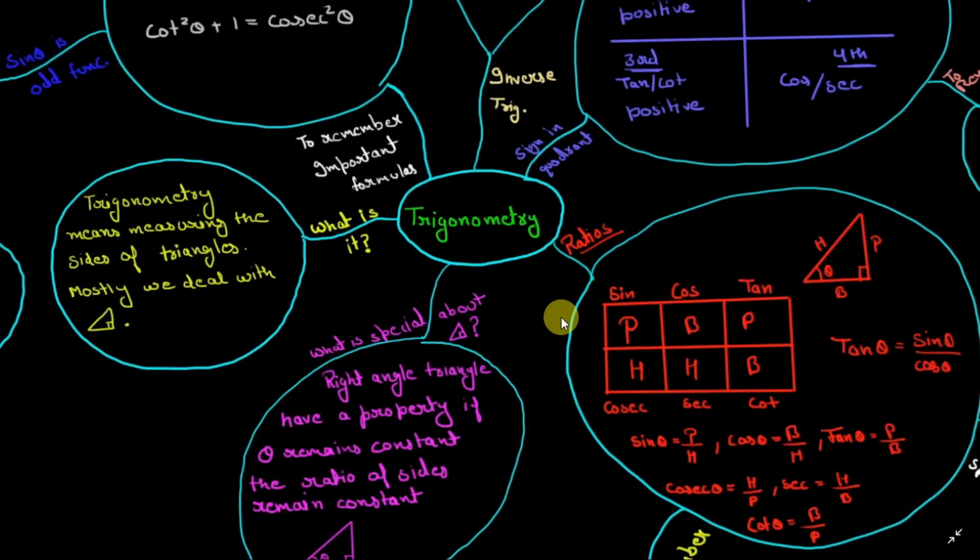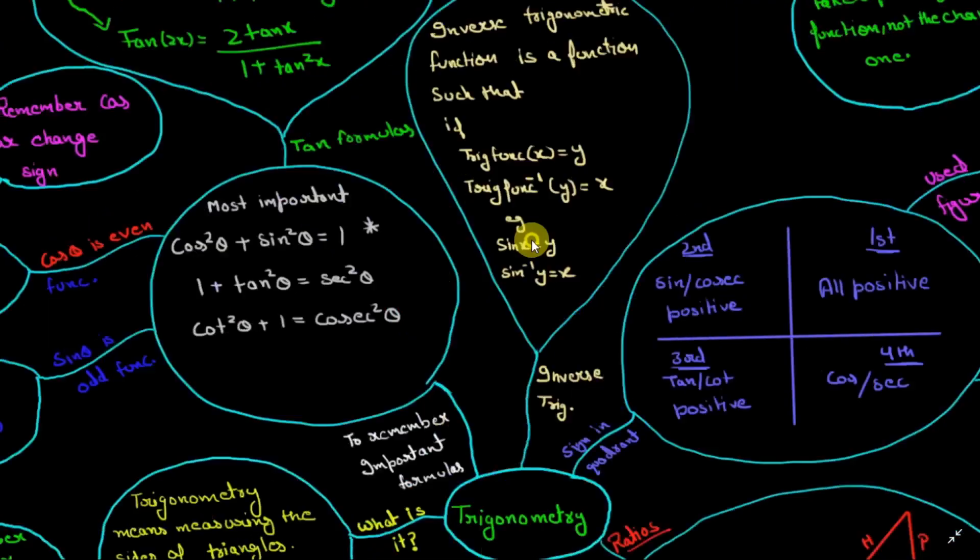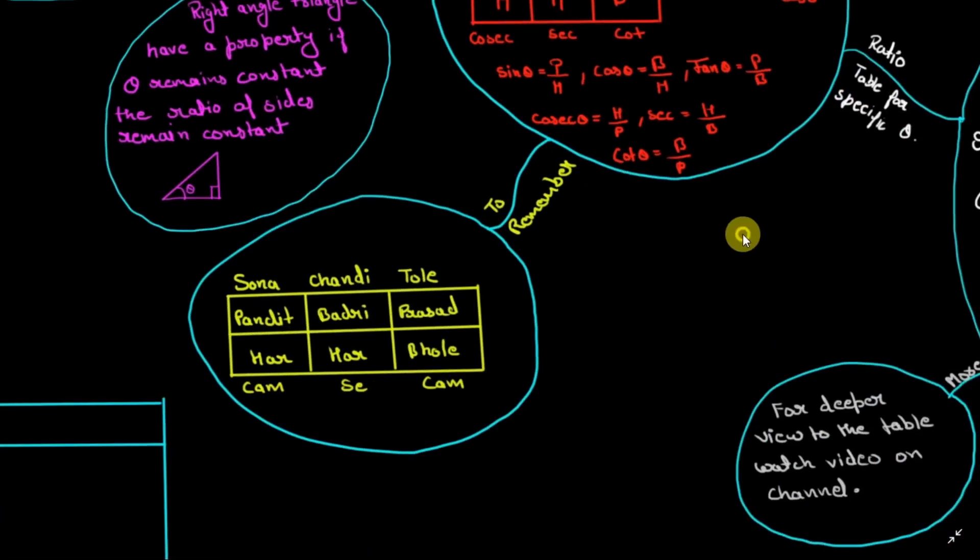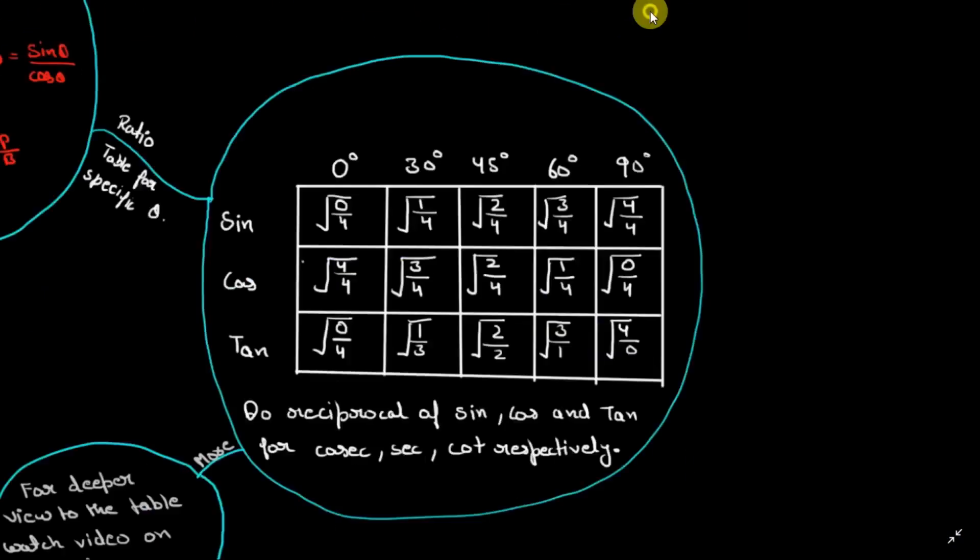So the first one is on Trigonometry. As always, this map starts from the center and each branch explains different topics of Trigonometry. This map contains almost everything you need to remember to solve Trigonometry questions.